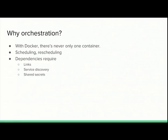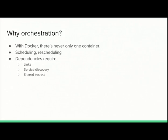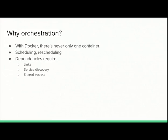With Docker Compose, things got even simpler. You simply write a YAML file that contains all this information: spin me up a Drupal container, spin me up a MySQL container, and please use the same password for both. As soon as you start running Docker on multiple machines, things get complicated. That's where Docker Compose can't help you anymore, and that's where orchestration tools like Container will help you.